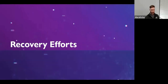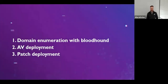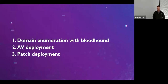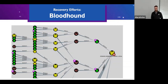For recovery, the first thing I do in an incident is enumerate the domain with BloodHound — I want to get the lay of the land. I deploy AV and start patching the vulnerabilities identified in our initial scans. BloodHound is a Windows enumeration tool that helps me figure out how an attacker would move through the network. If they've got 60 domain admins, I know I need to start cutting those back to reduce the attack surface.